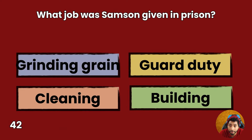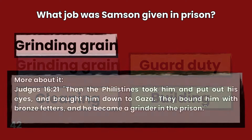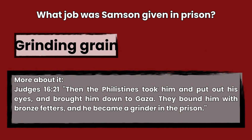Question 42: What job was Samson given in prison? Grinding grain, guard duty, cleaning, or building? Answer: Grinding grain. Judges 16:21 — Then the Philistines took him and put out his eyes and brought him down to Gaza. They bound him with bronze fetters, and he became a grinder in the prison.